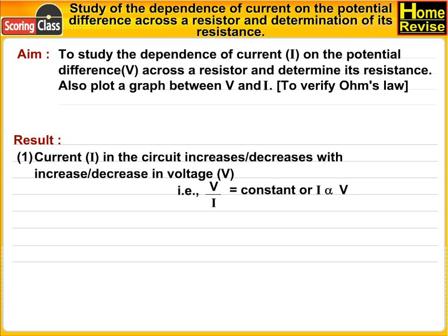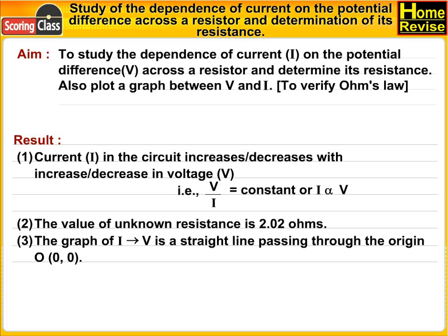That is, V upon I is equal to constant, or I is directly proportional to V. The value of unknown resistance is... ohms. The graph of I versus V is a straight line passing through the origin (0,0).